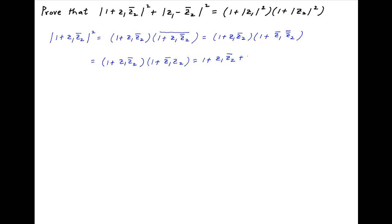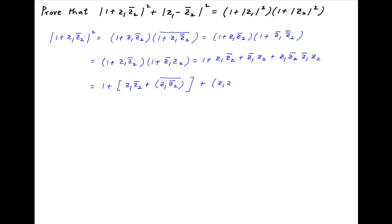Opening this up, we get 1 plus z1 times the conjugate of z2 plus the conjugate of z1 times z2, plus z1 times the conjugate of z2 times the conjugate of z1 times z2. This can be rearranged as 1 plus z1 times the conjugate of z2 plus the conjugate of z1 times z2, plus z1 times the conjugate of z1 multiplied by z2 times the conjugate of z2.